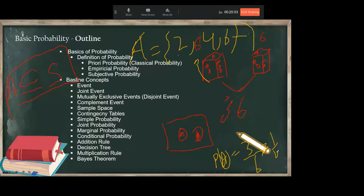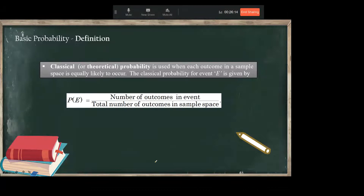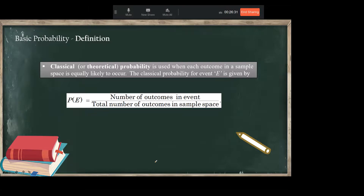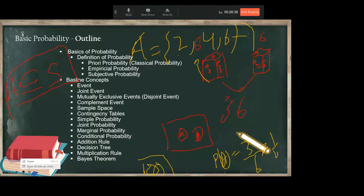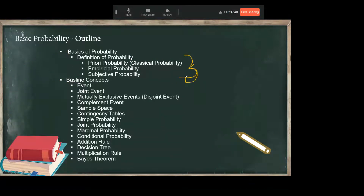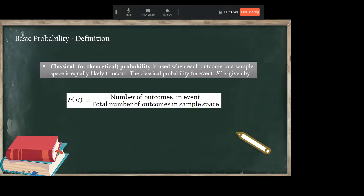Showing an even number on the die is one event because here we define it as an event with an even number. Two events can be mutually exclusive or not mutually exclusive. Before going further, let's define probability in a proper way.